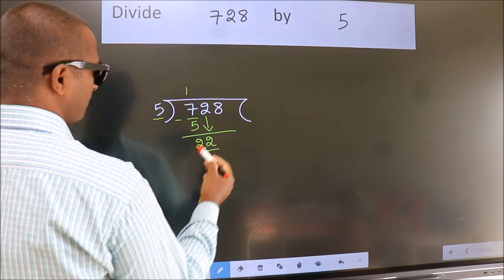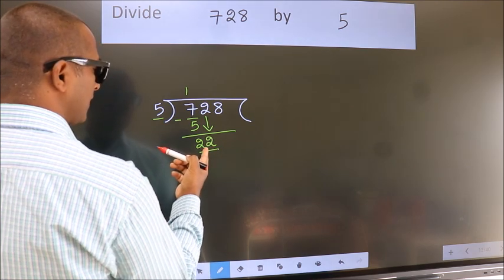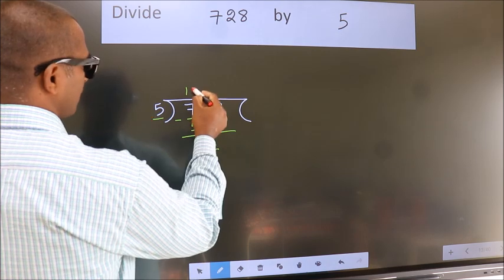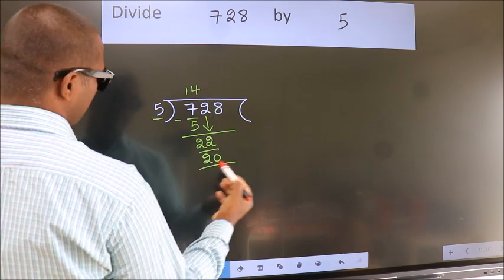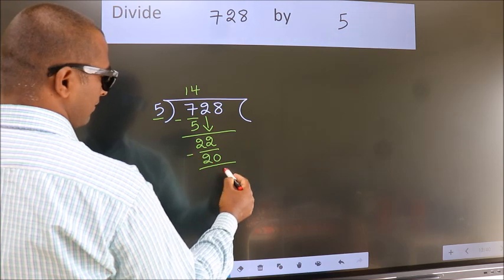So, 22. A number close to 22 in the 5 table is 5 fours 20. Now we subtract. We get 2.